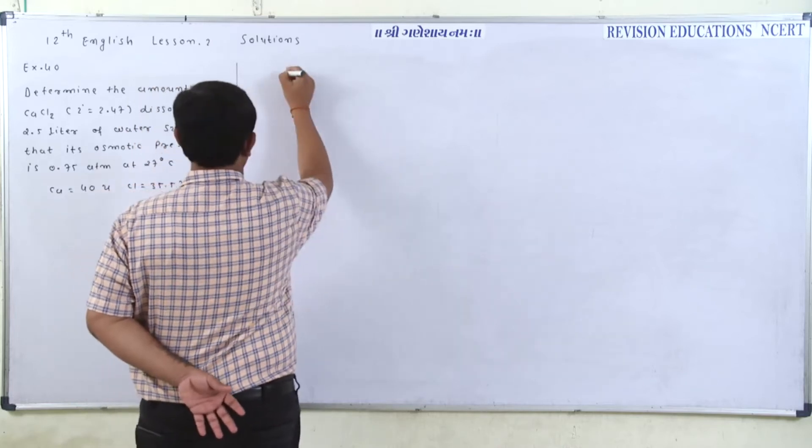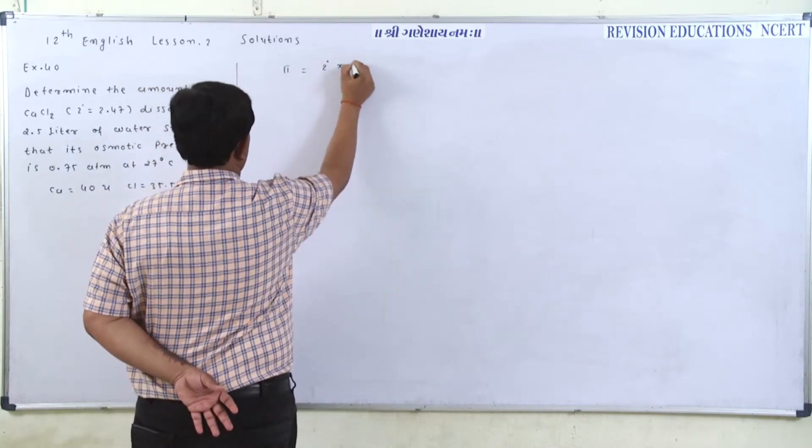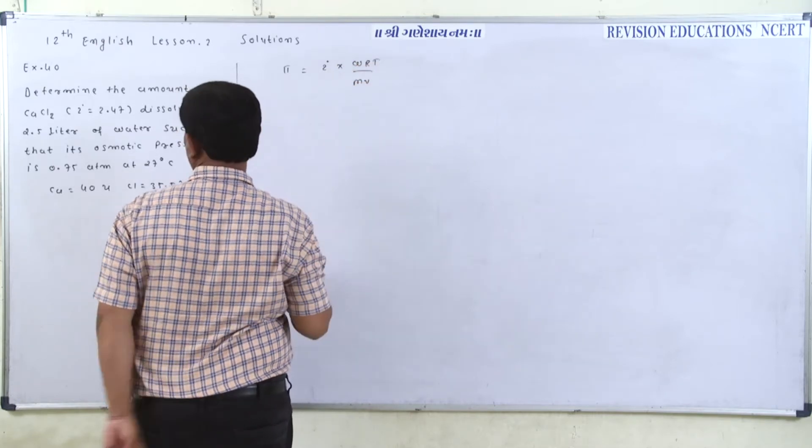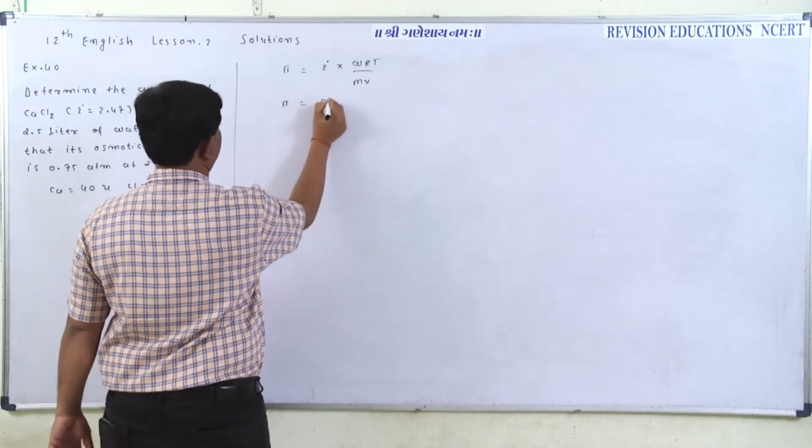So when we are using pi, we are using i into w R T divided by M V, and here we are using the data given to us. The osmotic pressure pi is equal to question mark.